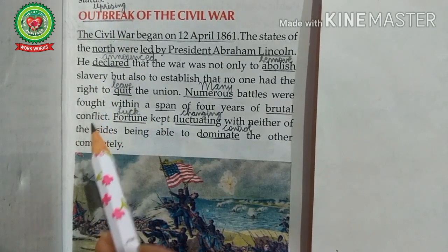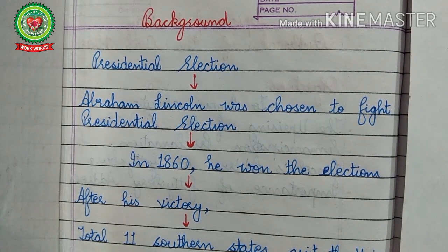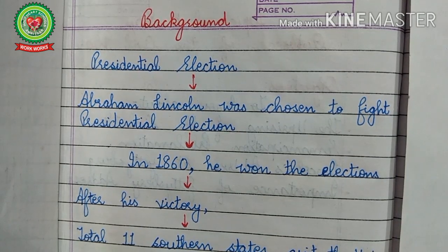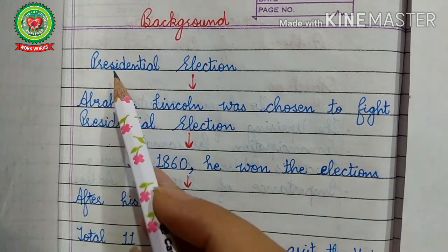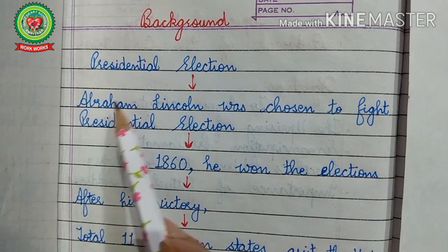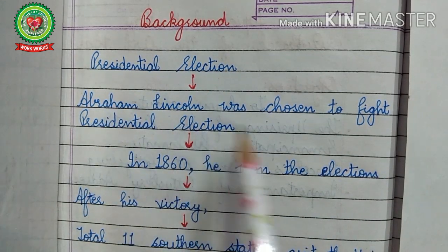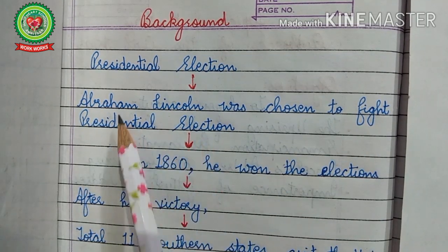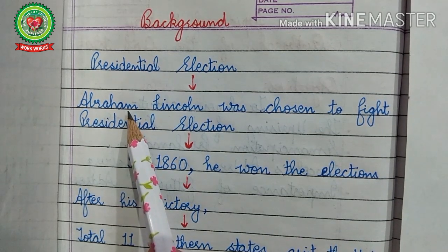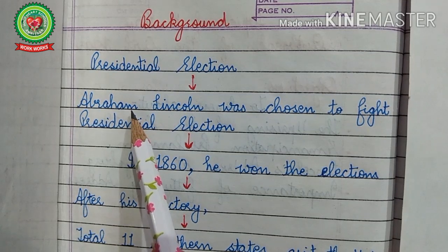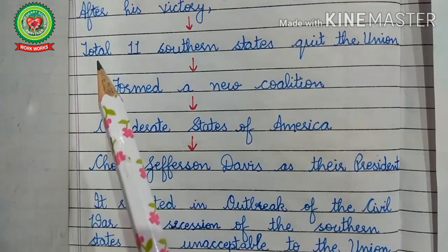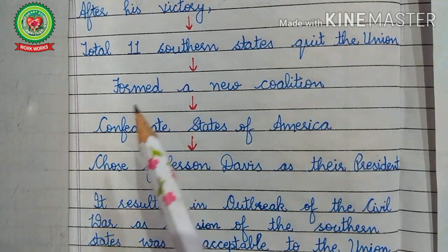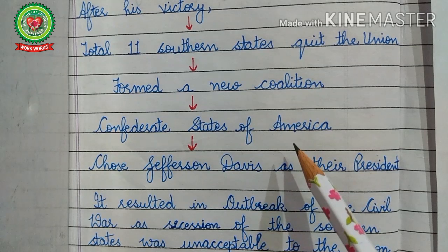The first question is: why did the American Civil War take place? As we had discussed, there were many causes, and the most important were the issue of slavery and the presidential election. Abraham Lincoln was chosen to fight the presidential election; he belonged to the Republican Party and was with the northern states. The elections were held in 1860, and Abraham Lincoln won. After his victory, total eleven southern states quit the Union and formed a new coalition called the Confederate States of America.